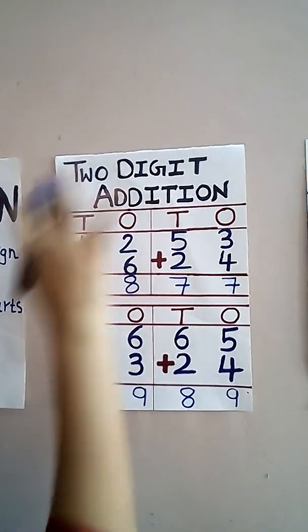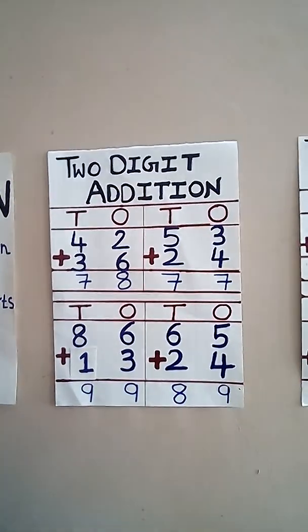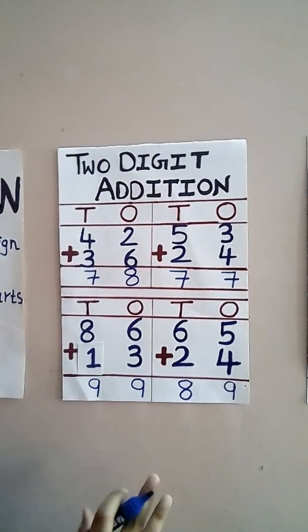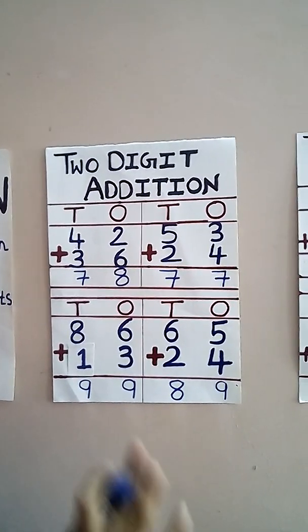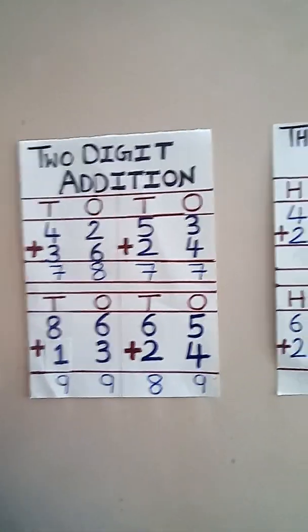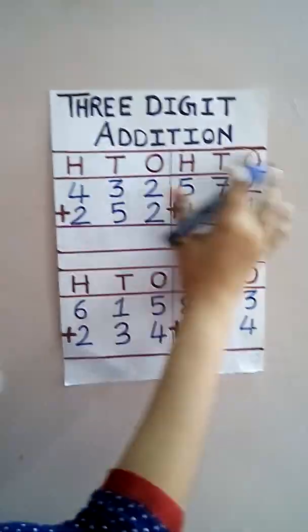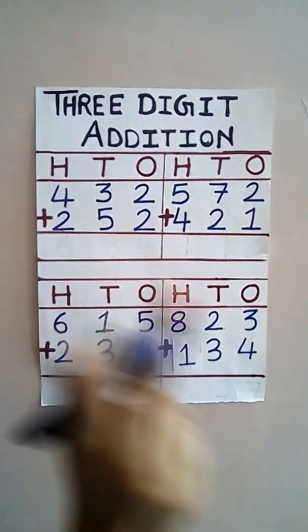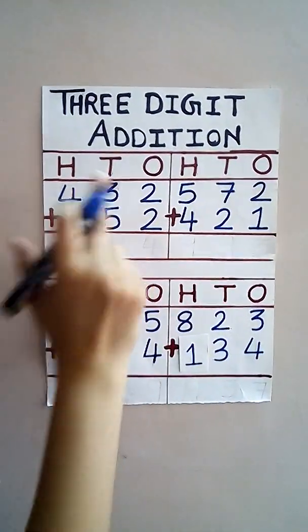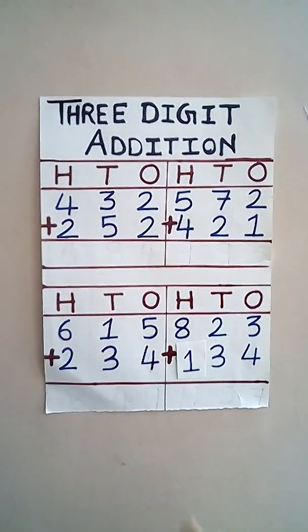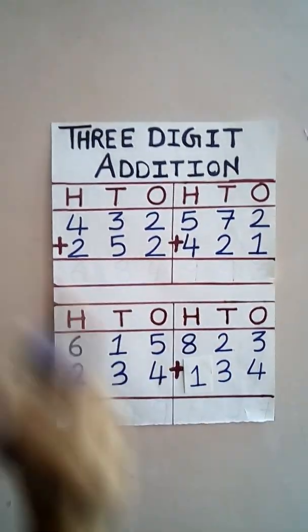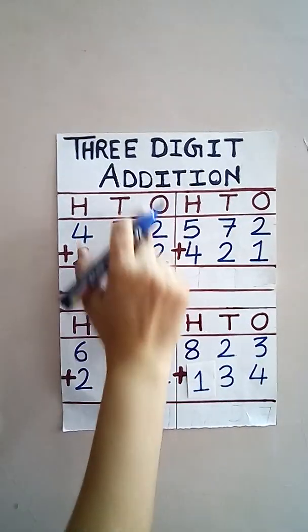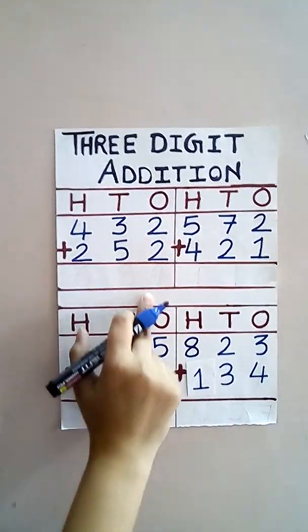Now the concept of two-digit addition is done. Now we will proceed with three-digit addition. See students, O stands for ones, T for tens, and H for hundreds. Here also we have to start from the back side only.